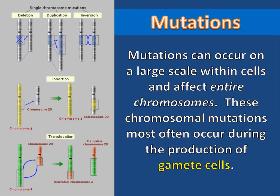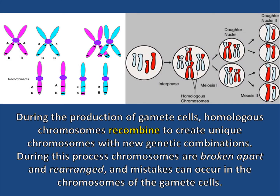Mutations can occur on a large scale within cells and affect entire chromosomes. These chromosomal mutations most often occur during the production of gamete cells, when homologous chromosomes recombine to create unique chromosomes with new genetic combinations.